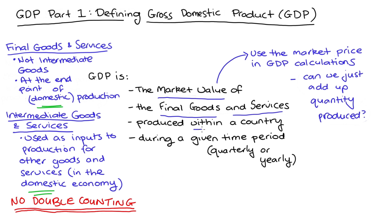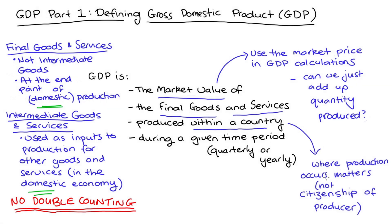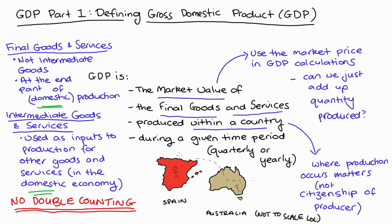When we talk about 'within a country,' what matters for GDP is where our final goods and services are produced, not the citizenship of the producer. For instance, if someone who is a citizen of Spain comes to Australia and sets up a factory where they make shoes, the value of that production goes to Australia's GDP because the production is happening in Australia — not to Spain's GDP, even though the owner is a Spanish citizen. The time aspect is pretty self-explanatory; we're often most interested in yearly GDP figures, and in practice we often get estimates using quarterly information.